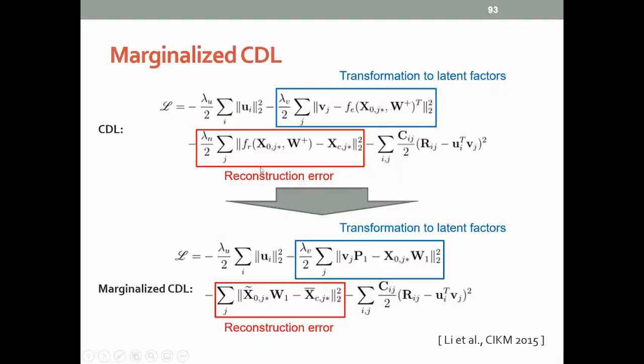So this whole thing is the marginalized version of the CDL. And one good thing about this is that it actually saves a lot of computation during inference. Because during inference, you only need to go through one single linear layer to get the representation.